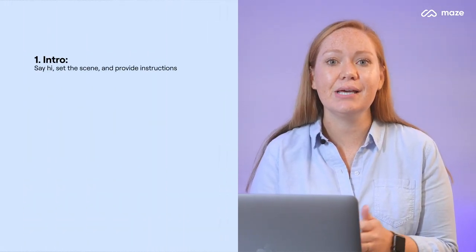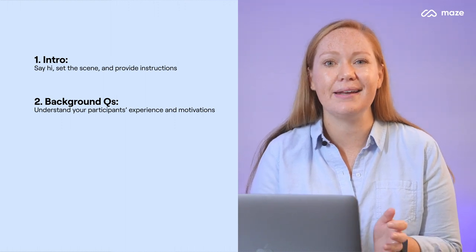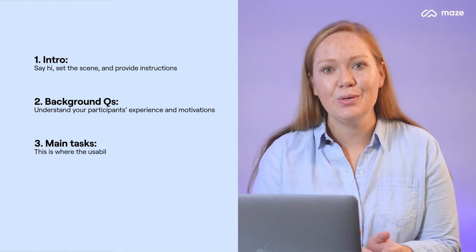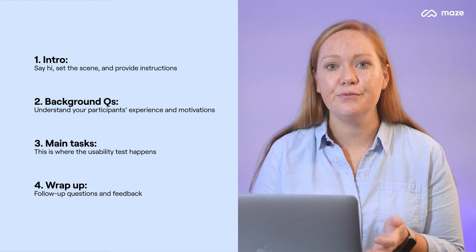Now you've got your goals, method, and participants — it's time to write the script and set your tasks. A script is your go-to when running your usability test. It guides the session, including main usability tasks and any other questions, and helps ensure all tests are consistent for each participant, that you don't miss anything, and that your test results remain unbiased. We suggest breaking the script down into four sections: an intro where you introduce yourself and explain what's going to happen; background questions to better understand your participants' experience, motivation, and nuance; your main tasks, which make up the bulk of the usability test; and finally a wrap-up where you ask follow-up questions or gather feedback about their experience.